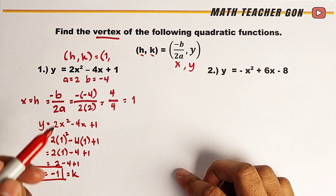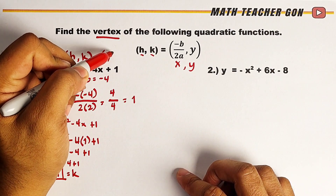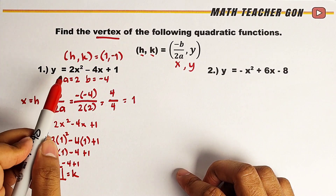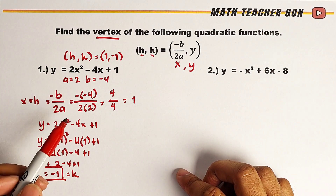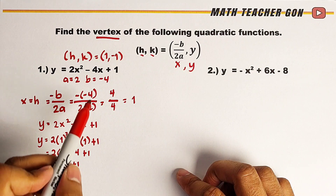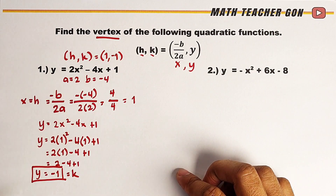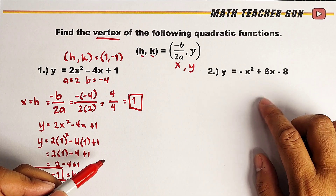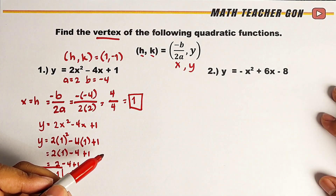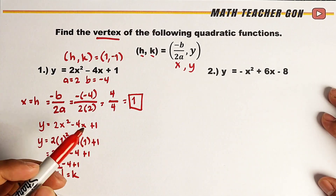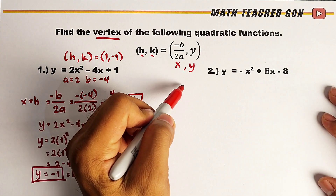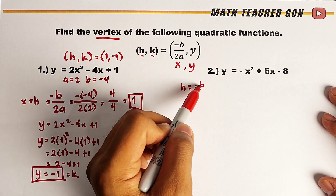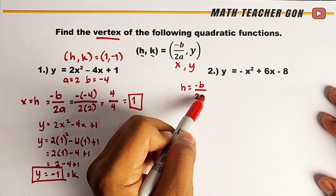The value of y is negative 1. So the vertex of the quadratic function y is equal to 2x squared minus 4x plus 1 is located at (1, negative 1). Now let's find the vertex of the other quadratic function. Again, let us use the formula h is equal to negative b over 2a.